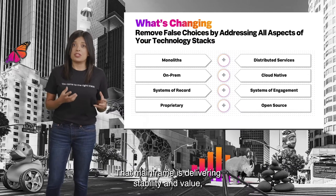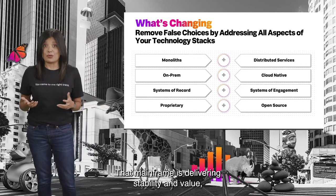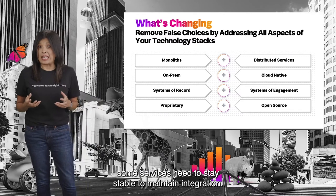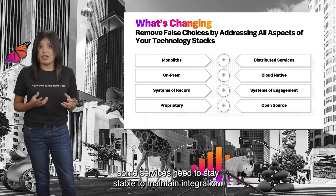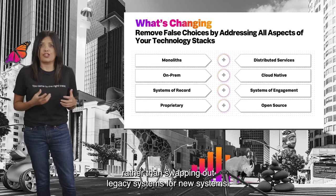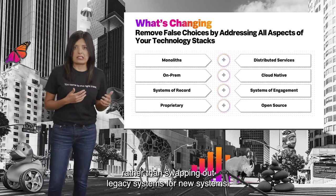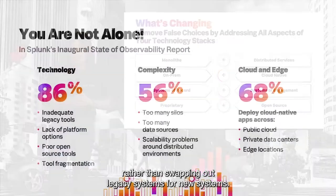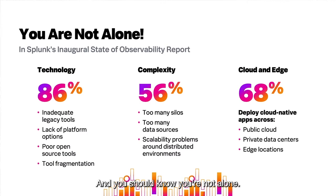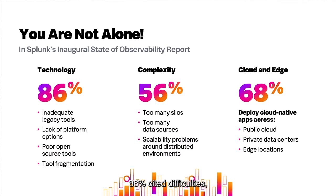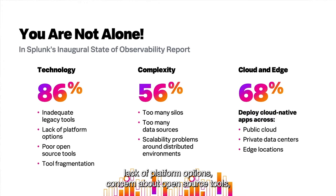That mainframe is delivering stability and value. Some services need to stay stable to maintain integration. Everything feels like an addition rather than swapping out legacy systems. And you should know, you're not alone. In Splunk's first state of the observability research, 86% cited difficulties including inadequate legacy tools, lack of platform options, concern about open source tools, and tool fragmentation.